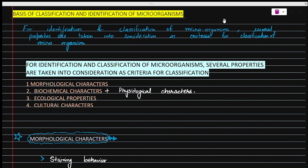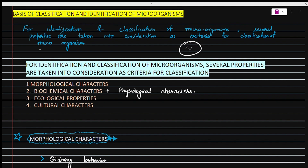Hello everyone and welcome to this class. In this class we are going to learn about the basis of classification and identification of microorganisms. When we grow a certain microorganism in a petri plate, after its growth we have to identify which category that microorganism falls into — that's why we classify and identify them.